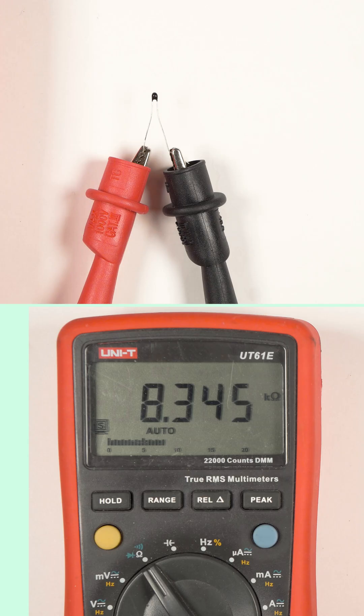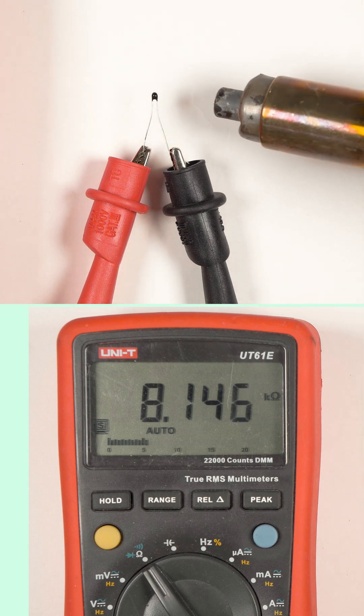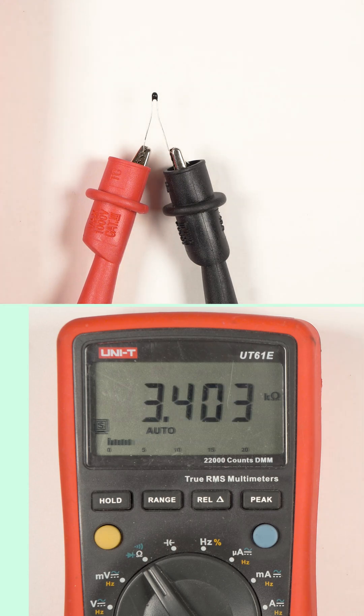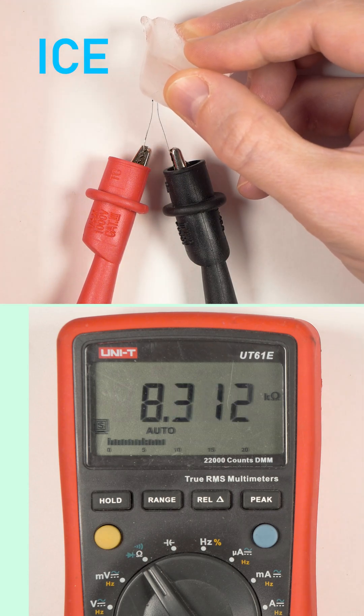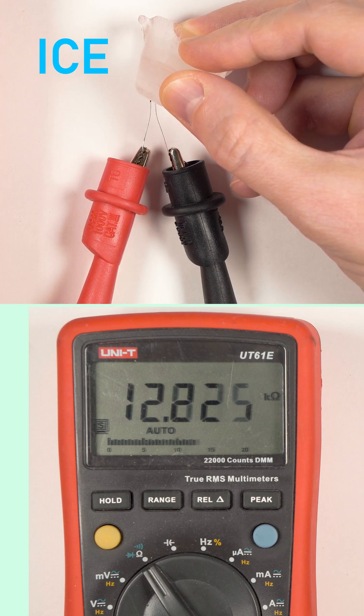A thermistor is a semiconductor whose resistance is proportional to temperature. Here I'm heating it with a hot air gun and we can see the resistance drop. And now I'm cooling it with a piece of ice, and resistance increases.